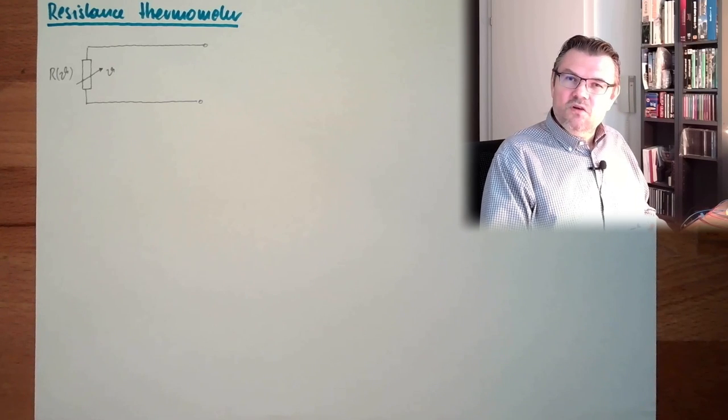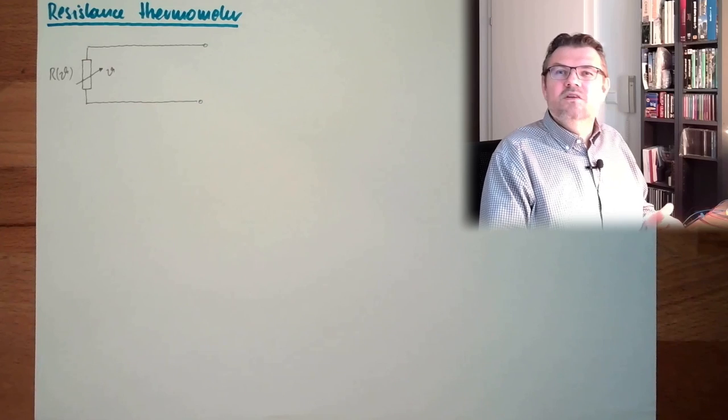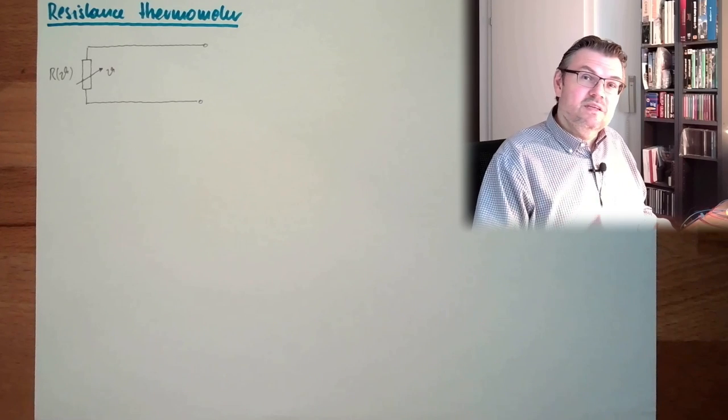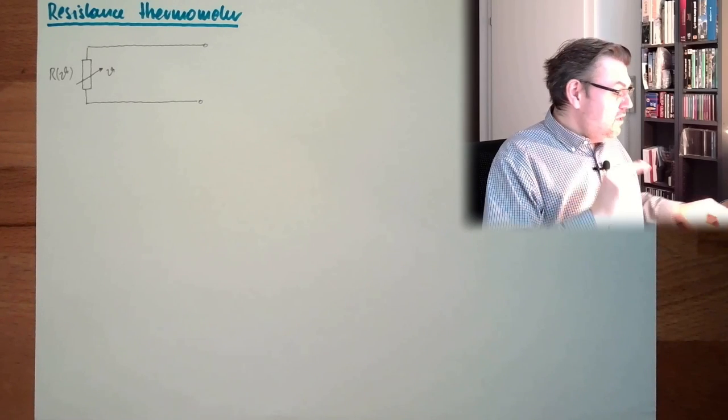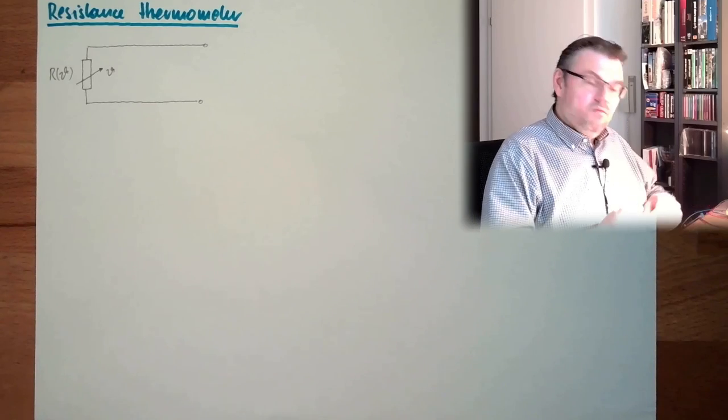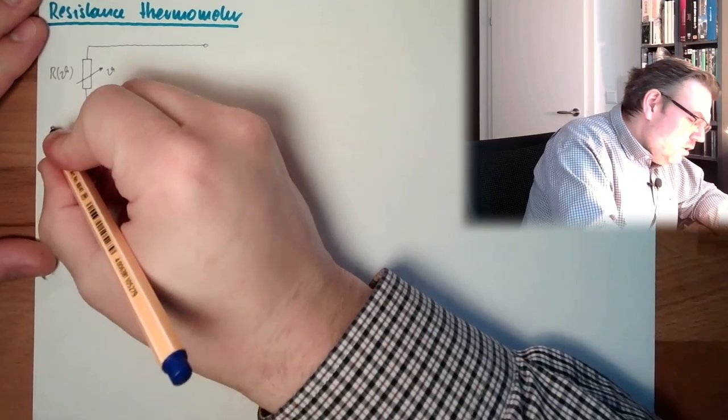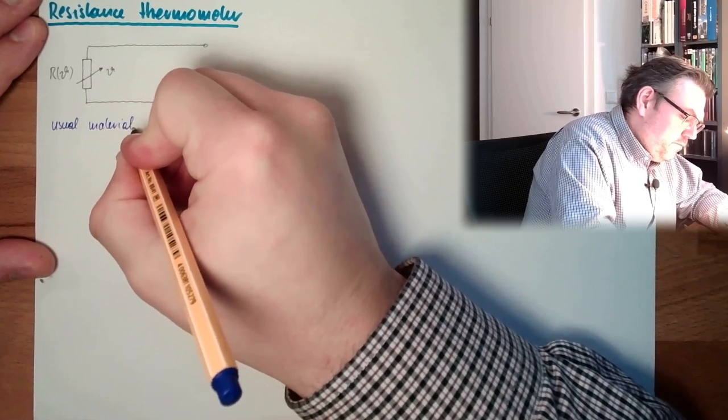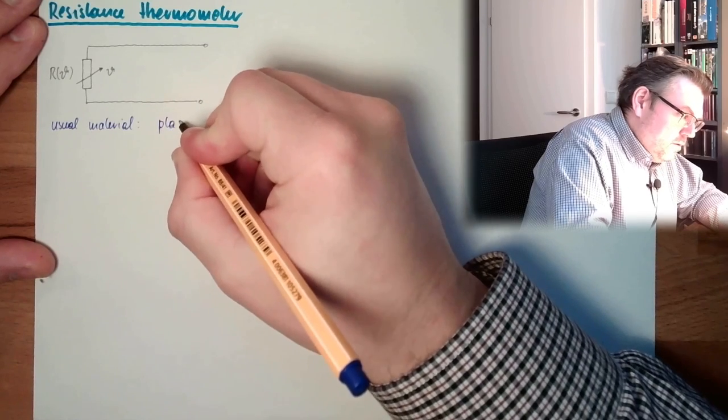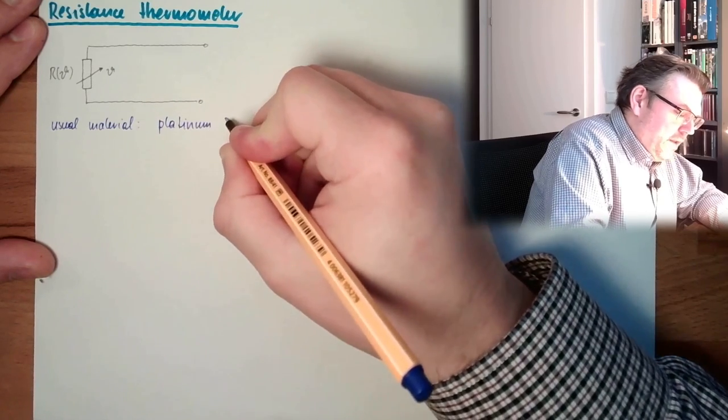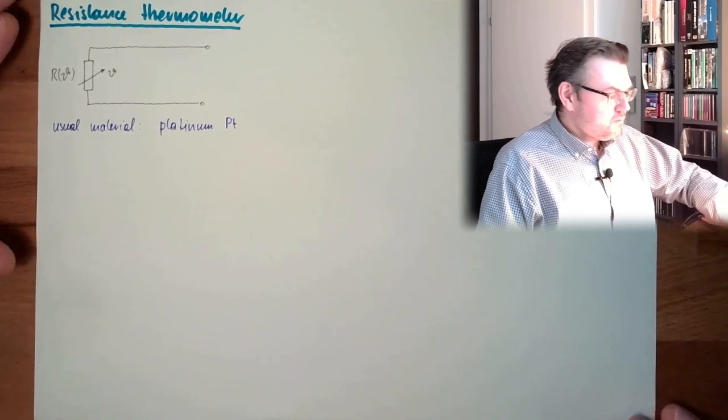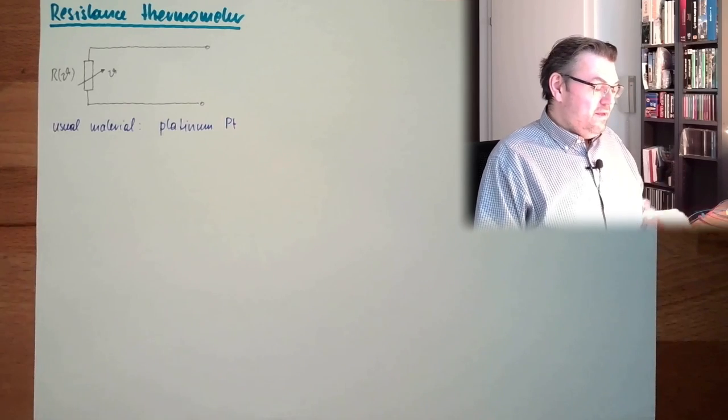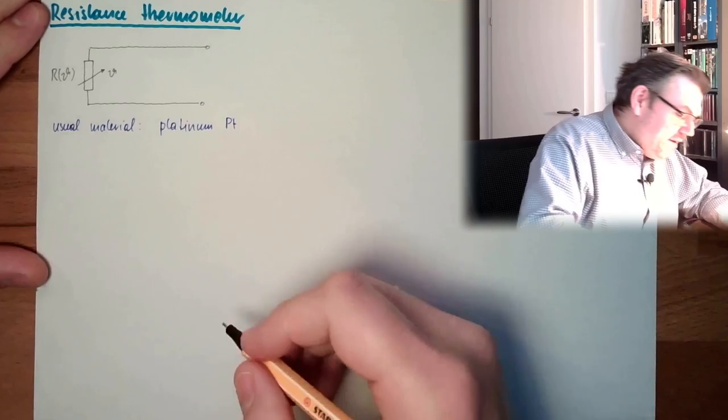Such material is not there. There is no, at least we don't know any material which is linear to temperature, which resistance is linear to temperature. Very close to this comes platinum. Usual material, platinum, Pt. Because, in platinum, we can calculate this R from theta.